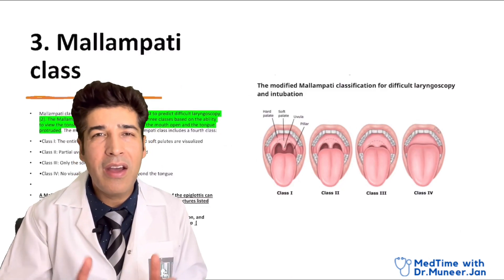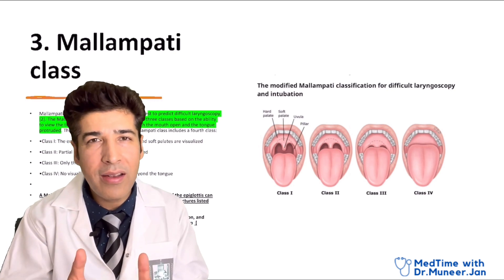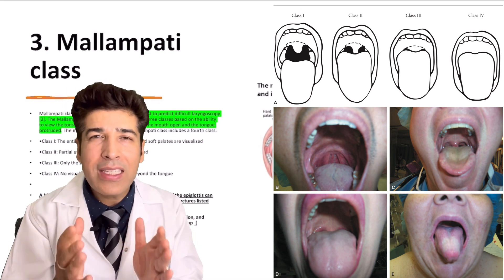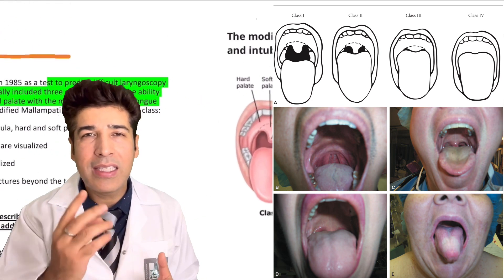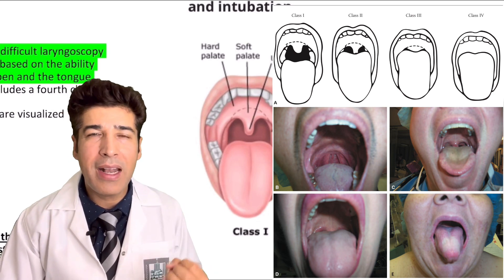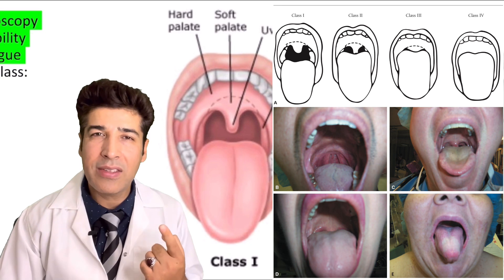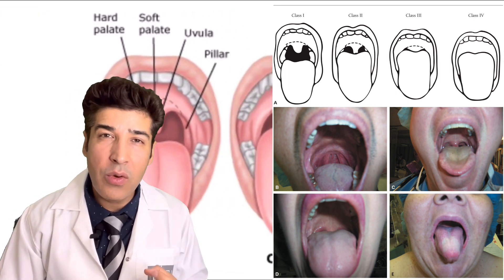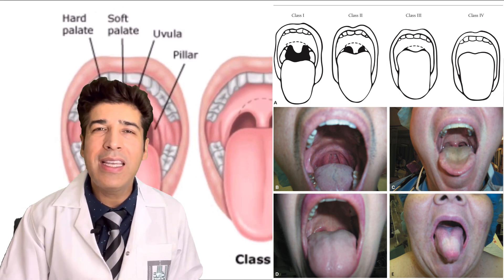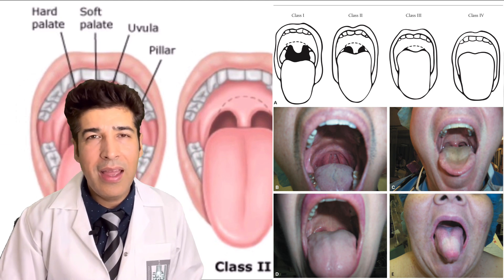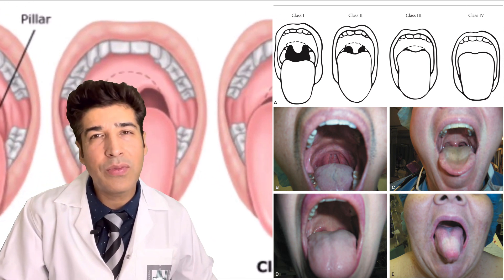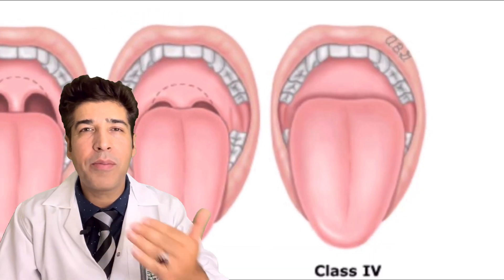The third thing is the Mallampati classification, which is very important. Ask the patient to sit in front, open the mouth as wide as possible with protrusion of the tongue. Class 1: you can see the pillars, tonsils, soft palate, hard palate, and uvula. Class 0: tracheal rings are also visible. Class 2: only partial visualization of the uvula. Class 3: only soft palate visible. Class 4: no structure visible beyond the tongue.